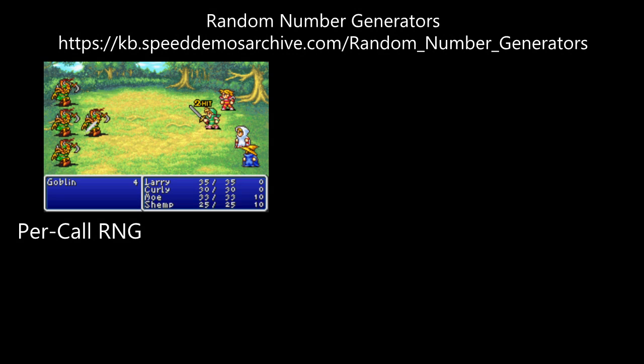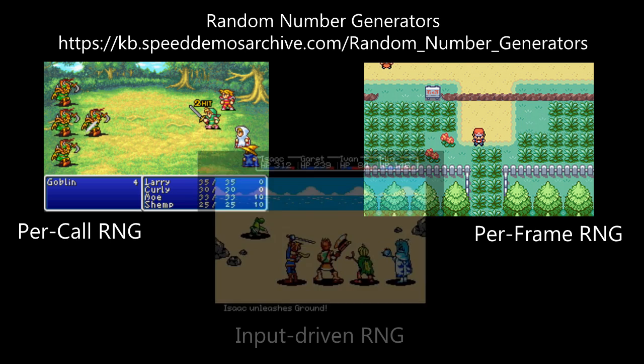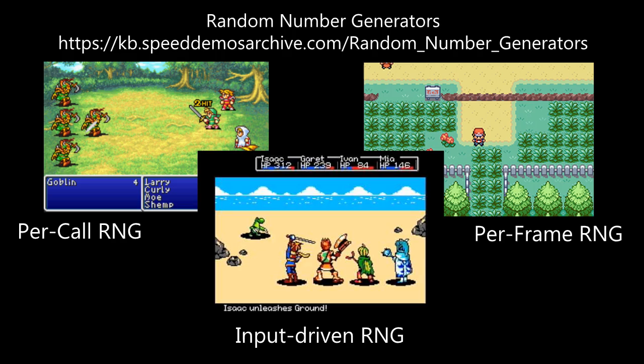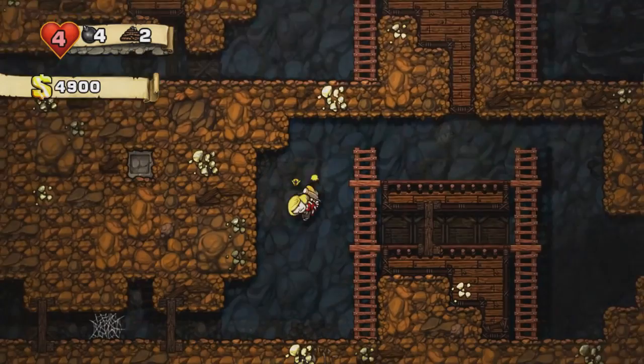For example, an RPG might rely on per-call RNG when calculating whether your attack will deal critical damage or miss entirely. Other games might calculate RNG values for every single frame a game is active, regardless of whether a random number is currently needed — this ensures that a value is always available and is unlikely to be manipulated. A third type is input-driven, using mouse movement or some other form of player input to determine a number. Per-call RNG is commonly used in roguelikes and procedurally generated games for determining level layout, and many games that do this use what's called a seed to generate a level — for example, in Minecraft, The Binding of Isaac, or Spelunky.